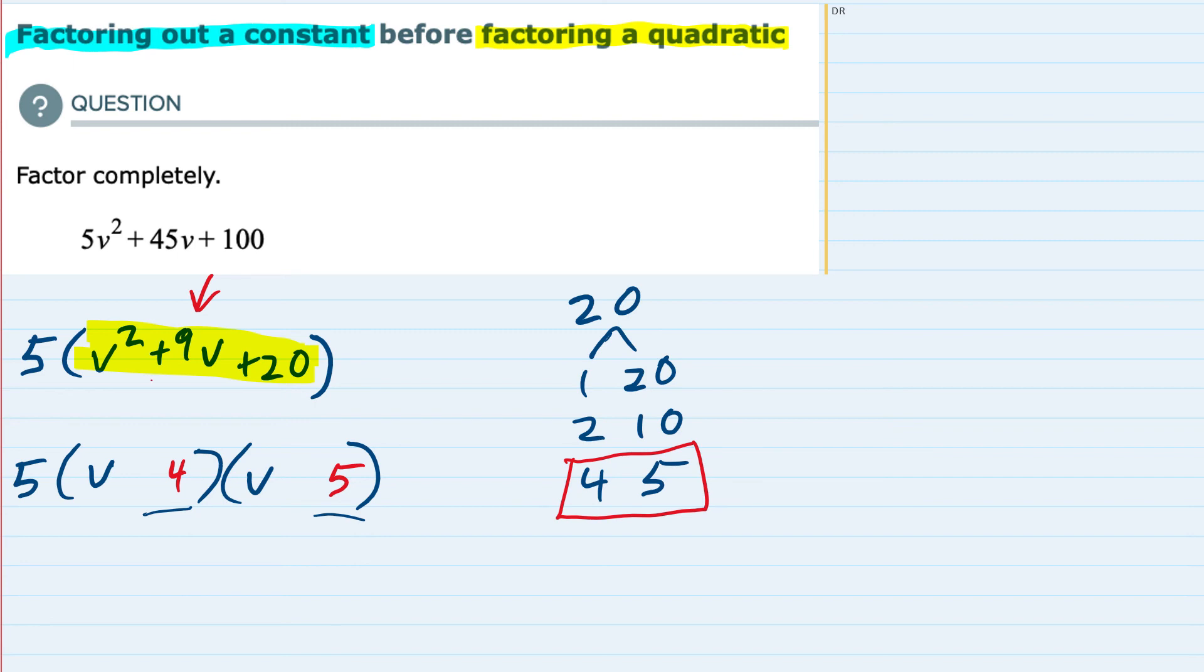But in order for them to add up to that 9v, they have to be a plus 4 and a plus 5. So just checking that by foiling,